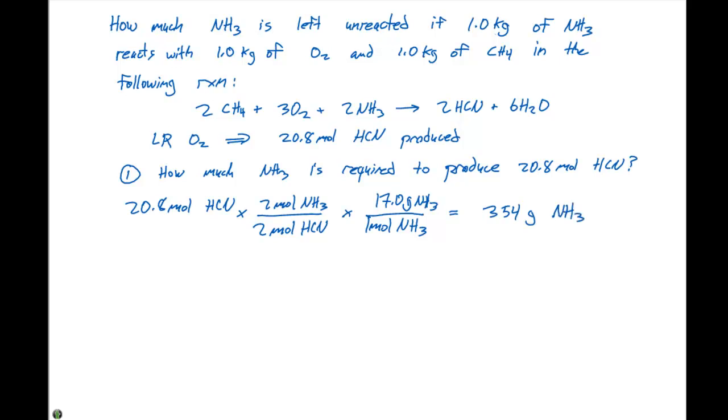Now when we start calculating these things, I'm going to try to emphasize how would we express this number in a sentence. This is 354 grams of NH3, and we can say that 354 grams of NH3 is required to produce 20.8 moles of HCN.